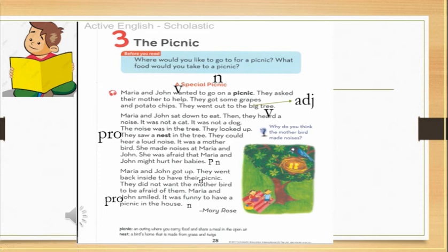Why did Maria and John return to the house? Why did Maria and John return to the house? Yes. They did not want the mother bird to be afraid of them. They went back inside to have their picnic. They did not want the mother bird to be afraid of them.